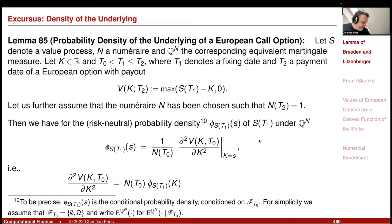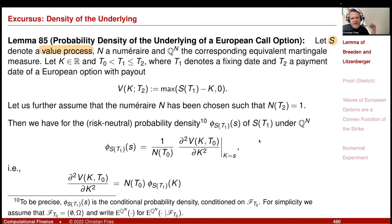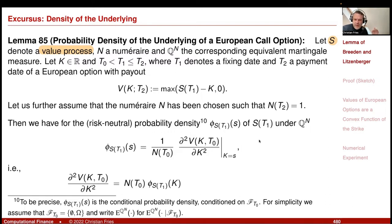So here is the little lemma. This is sometimes also called Breeden and Litzenberger, because it's from that paper. Assume that S is some value process — for example, a stock price. But actually, the method can also be applied to interest rate derivatives, where S is a forward rate and the option is an option on the forward rate, or S is a swap rate and the option is then a swaption, an option on a swap. So that's not linked only to equity derivatives.